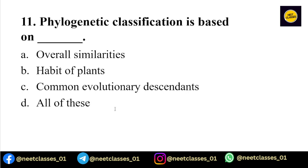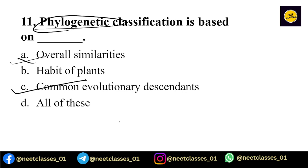Next: phylogenetic classification is based on common evolutionary descendants. The options were overall similarity, habitat, or common evolutionary descendants. Phylogenetic means common evolutionary descendants, so that is the answer.